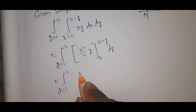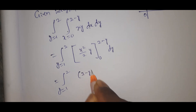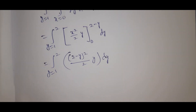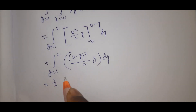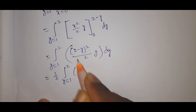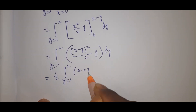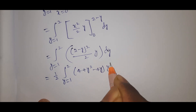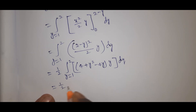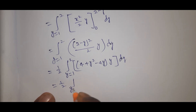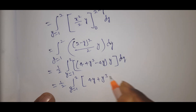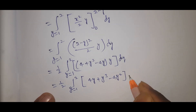This equals integral y equal to 1 to 2, of (2 minus y) whole squared by 2 into y dy. Using the expansion (a minus b) whole squared, we get 4 plus y squared minus 4y into y, dy. That equals 1 by 2 times integral y equal to 1 to 2, of 4y plus y cubed minus 4y squared dy.